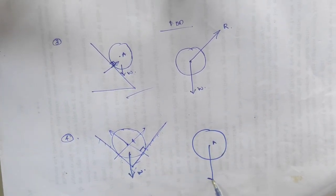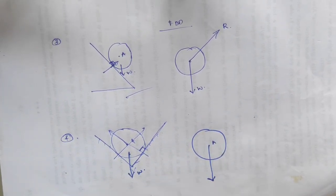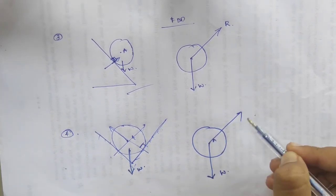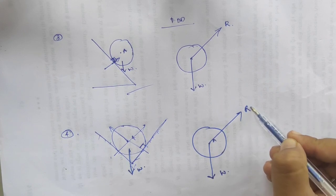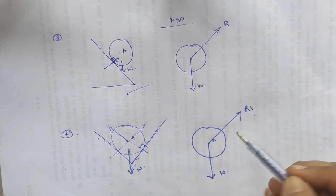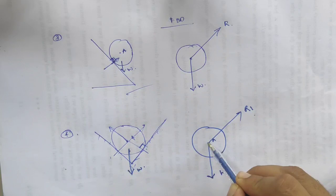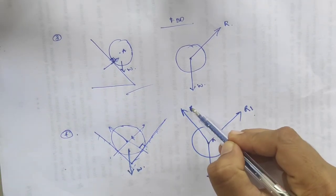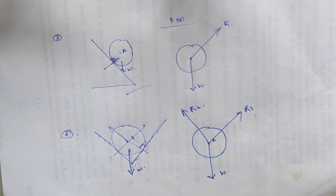Now while drawing the free body diagram, we can consider the weight as W. The reaction from the left side surface will pass in this direction; we can take this as R1. Similarly, the reaction from the right side surface we can take as R2. This will be the free body diagram of this kind of figure.